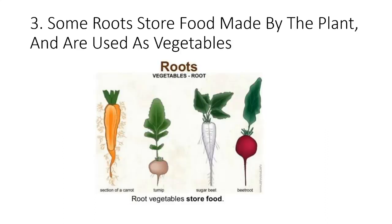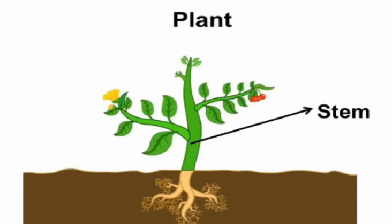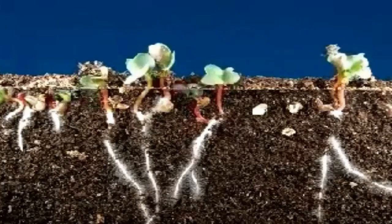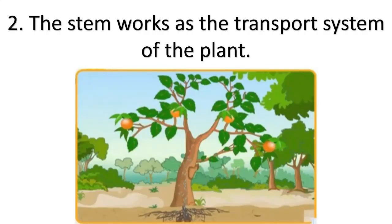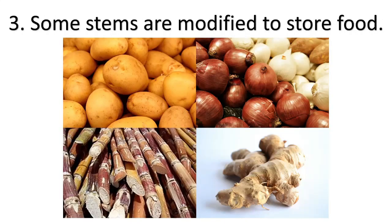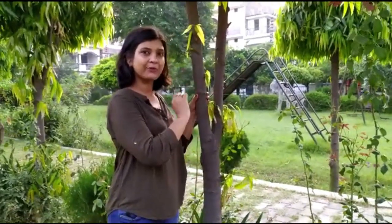Some roots store food for their plants. Now, talking about the shoot — it is classified into stem, leaves, flowers, and fruits. The stem grows upwards from the roots and helps the plant to stand straight. It works as the transport system of the plant. Some stems are modified to store food also.